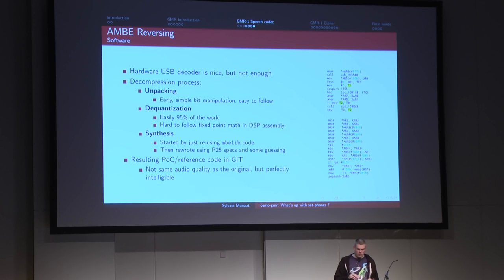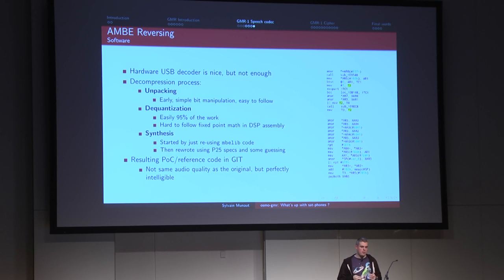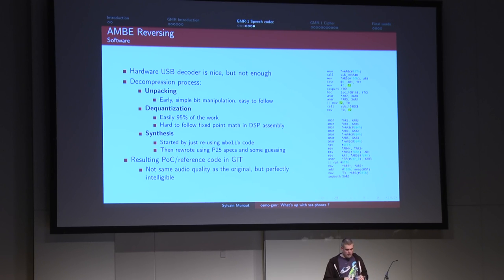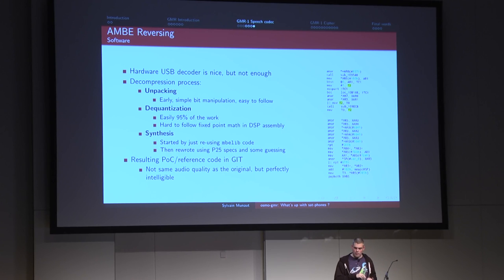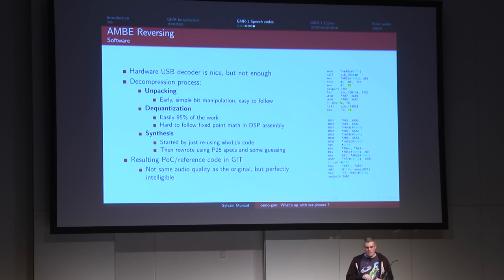I wasn't happy with mbelib's code quality or performance - it wasn't actually faster than the hardware decoder. So I went back to the P25 specifications and rewrote a clean implementation of the synthesis step, guessing the differences: everywhere it said 20 milliseconds I put 10 milliseconds; where there was a 512-bin FFT I put 256, and adapted as I went. The resulting code is in the git and you can decode voice. It works pretty well, though there are some subtle differences compared to the original codec since DVSI does additional quality improvements.